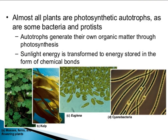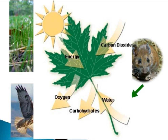Almost all autotrophic plants, photosynthetic autotrophs, include some bacteria and algae. Autotrophs generate their own organic matter through photosynthesis, where sunlight energy is captured and stored in the form of chemical bonds. Photosynthesis is a synthesis of carbohydrates by the green organs of the plant in the presence of sunlight, from carbon dioxide and water taken up from air and soil respectively, with oxygen as a by-product.